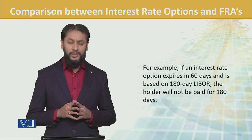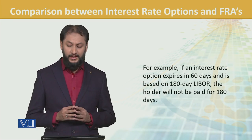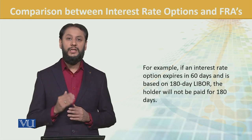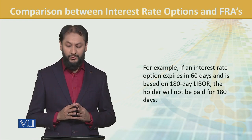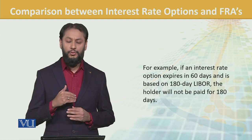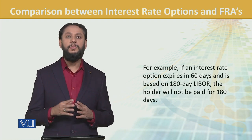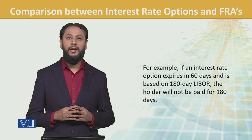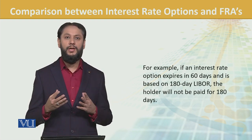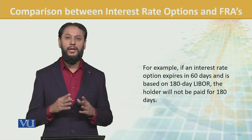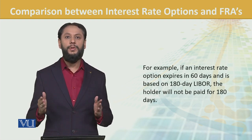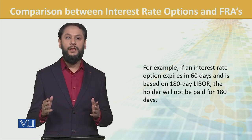For example, if an interest rate option expires in 60 days and is based on 180-day LIBOR, the holder will not be paid for 180 days. Entitlement is determined at expiry, but the actual payment occurs after the full 180-day period is executed.